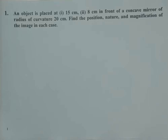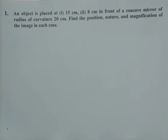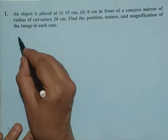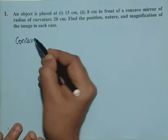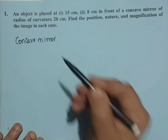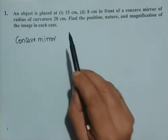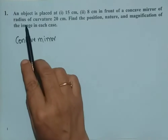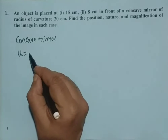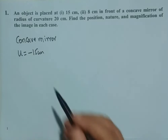We read the first problem now. An object is placed at 15 cm, and in the second part 8 cm, in front of a concave mirror of radius of curvature 20 cm. Find the position, nature and magnification of the image in each case. We are given a concave mirror. For part one, object is placed at 15 cm, so U equals minus 15 cm, because it is placed in front of the mirror.